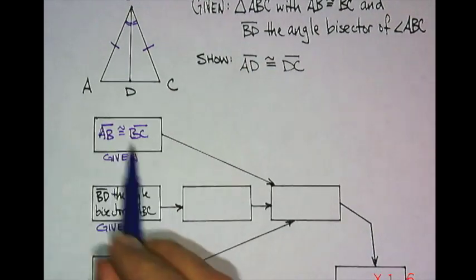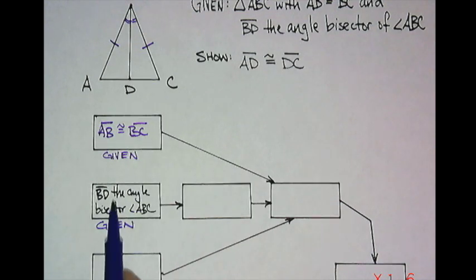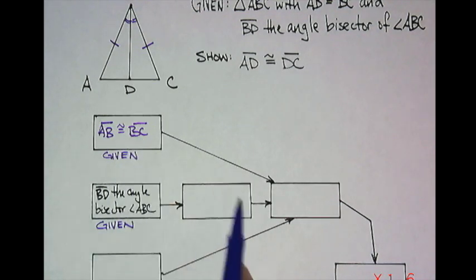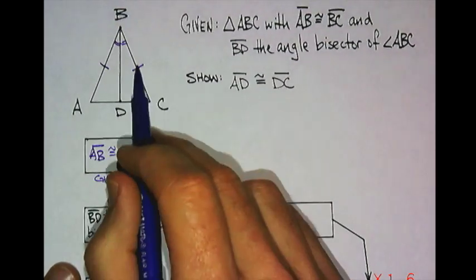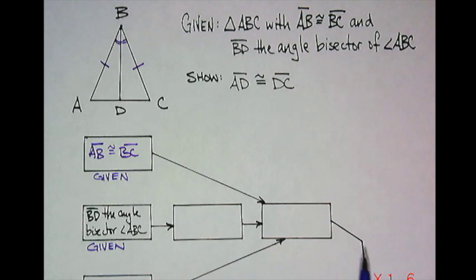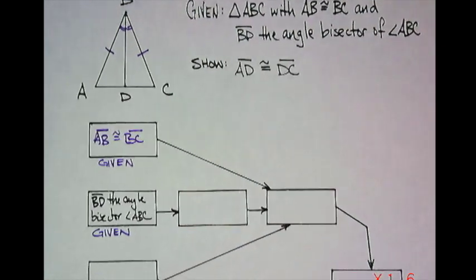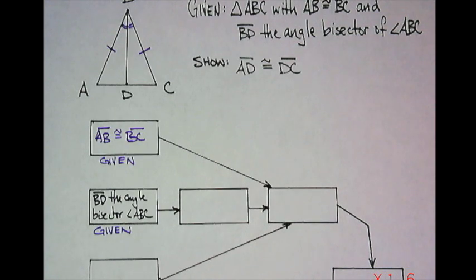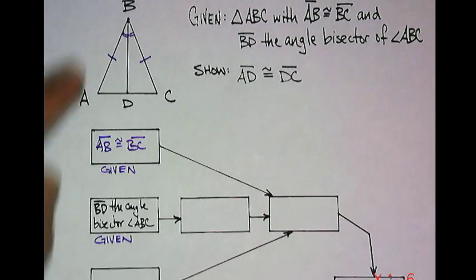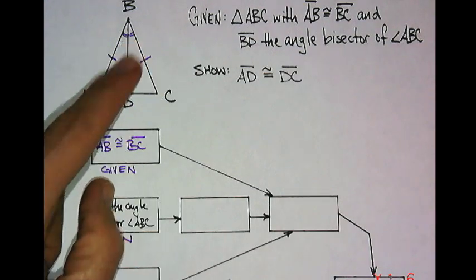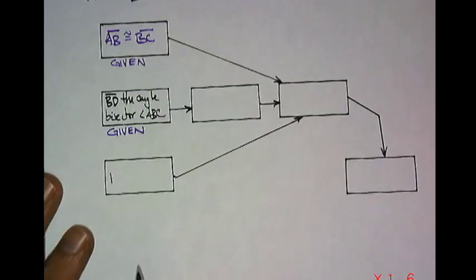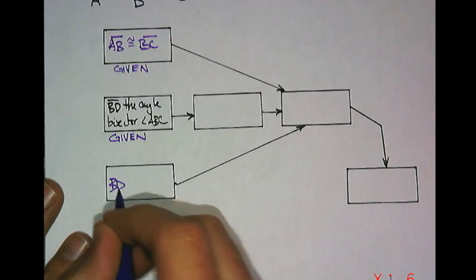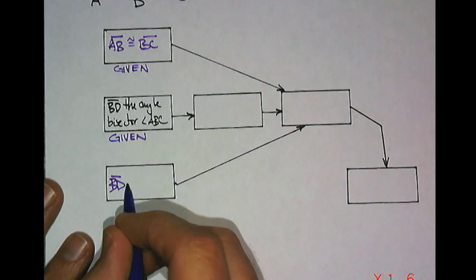I know this angle bisector, and these three things are going to come together and show me something else. To prove those two triangles congruent, I've got a side, an angle, and I need another angle or another side. We could do this in a couple of different ways. I'm going to choose side-angle-side because I think that's quicker. In this last box, I want to write BD is congruent to BD.